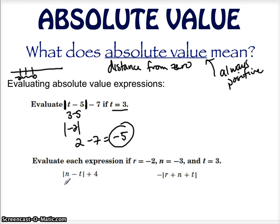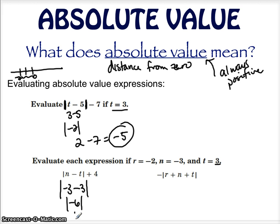Down here we have n, which is negative 3, minus t, which is 3 — take the absolute value of that. So negative 3 minus 3 is negative 6. The absolute value is 6, and then plus 4 is 10. So that's your answer.